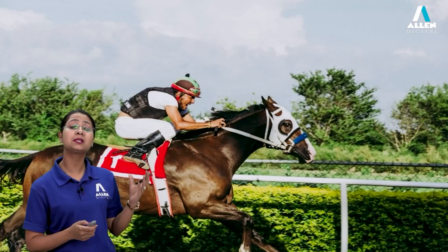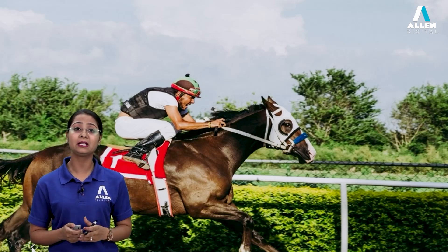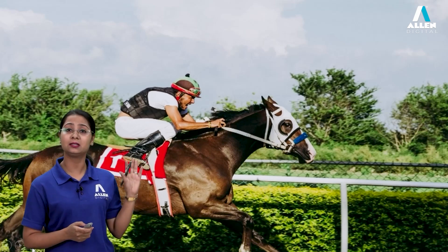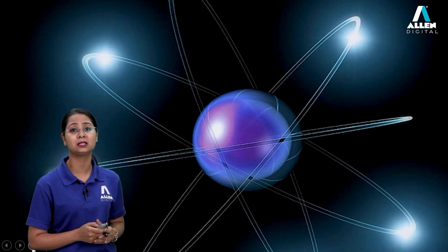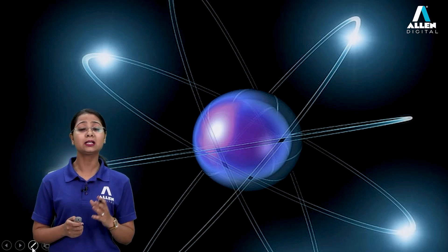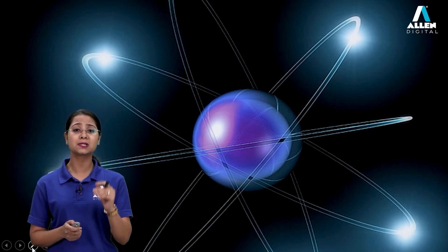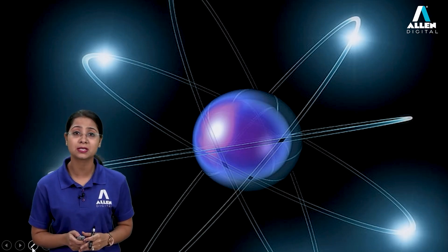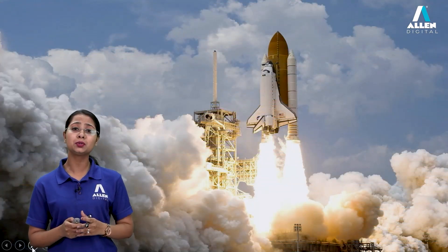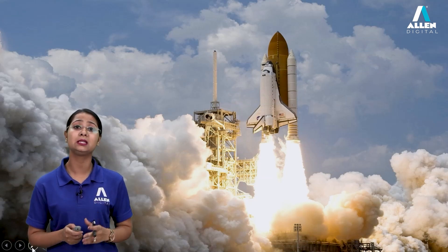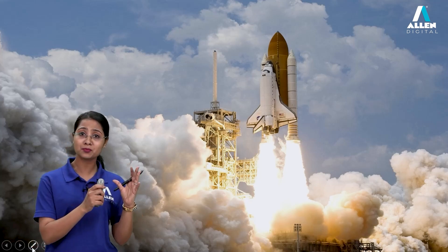Here you can clearly see there is a horse on which a person is sitting and he is riding the horse. Can we find that this horse is moving or not? Yes, this horse is moving. Next example: there is a galaxy. We know that every celestial body in the universe is in motion. We can take one more example — the smallest particle, called the atom. In an atom there are three types of particles: proton, neutron, and electron. The electron is the smallest particle and it revolves around the nucleus. So we can conclude that every body in the universe is in motion.